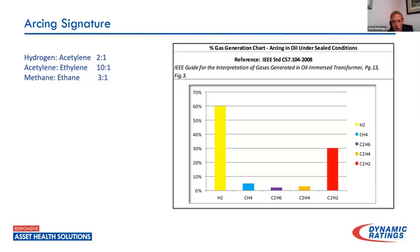Once we get those alarms, what do we do? Typically we're going to go pull an oil sample. So let's talk very quickly about what an arc looks like, what PD looks like, what does an event that's affecting a lot of paper — something in a winding — look like versus something that's only affecting a connection.